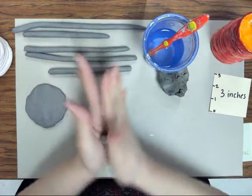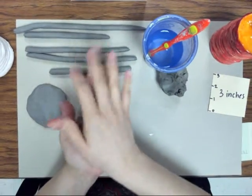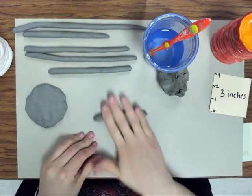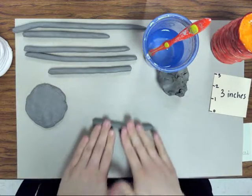You just pull it off and then you start rolling it back and forth. Put it on the table and keep rolling to make it look like a long snake.